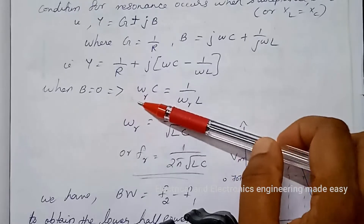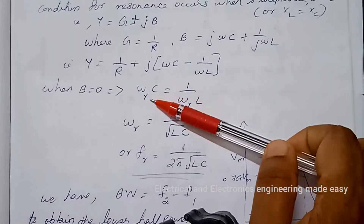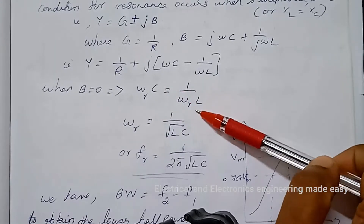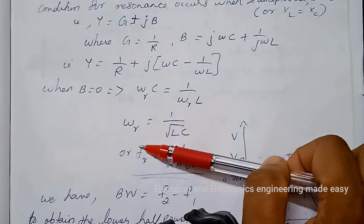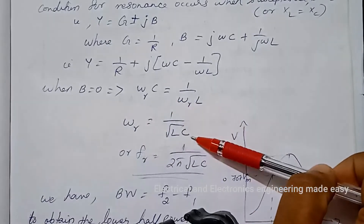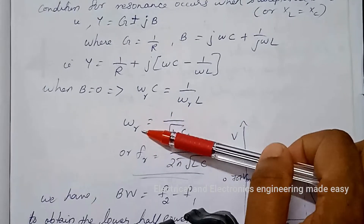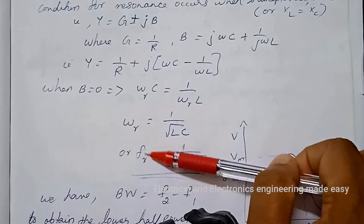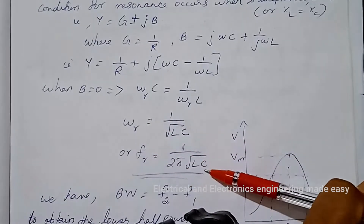The frequency at which resonance occurs is when B equals 0, that is when omega_r·C equals 1 by omega_r·L. We can write omega_r equals 1 by root(LC). That is omega_r equals 2·pi·fr, or fr equals 1 by 2·pi·root(LC).